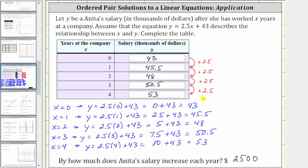Before we go, if we look back at the equation, we have y equals 2.5x plus 43. Notice how the coefficient of x is 2.5, which means as x increases by one, the y value will increase by 2.5.